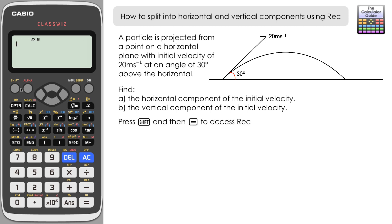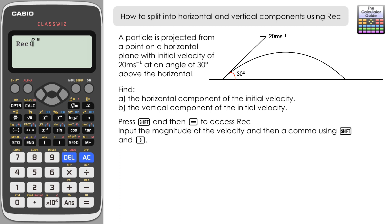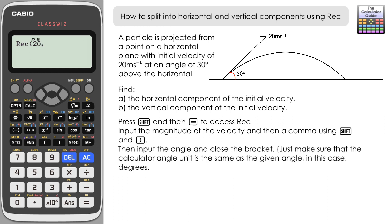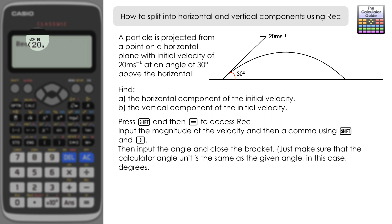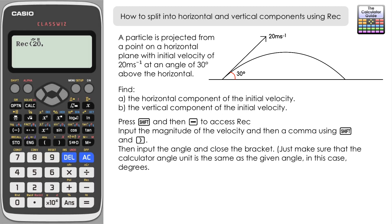To access the REC feature, press Shift and then the minus sign — you can see REC just above that. That puts on REC and then a left bracket. Input the magnitude of the velocity, which is 20 meters per second, then a comma using Shift and right bracket. Then input the angle. Make sure the angle unit on your calculator matches the question — we have degrees here, so input 30. Then close the brackets.